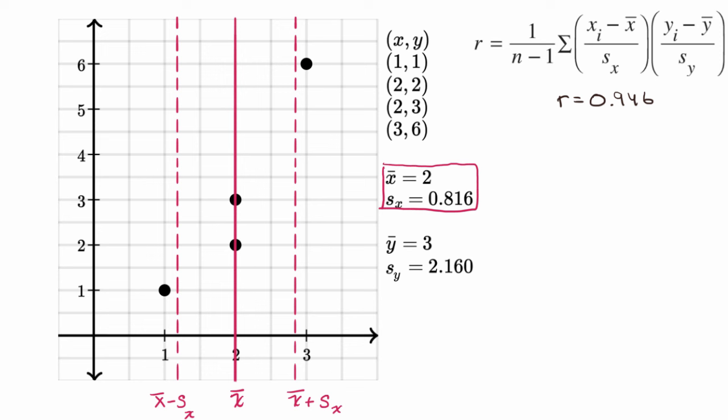And then we could do the same thing for the y variables. So the mean is three, and this is one sample standard deviation for y above the mean, and this is one sample standard deviation for y below the mean. And visualizing these means, especially their intersection, and also their standard deviations will help us build an intuition for the equation of the least squares line.